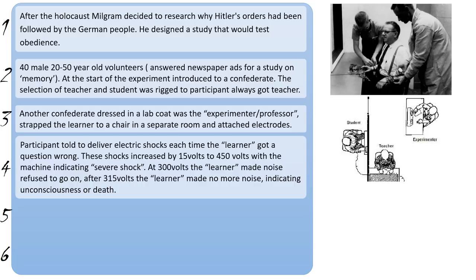However, the teacher was told to continue with the experiment. At set points, at 300 volts, the learner would make a loud noise and completely refuse to go on. And after 315 volts, after that shock, the learner would make no more noise — an indication that the learner had either fallen unconscious or possibly died because of the delivery of these shocks.